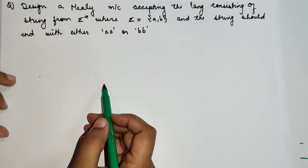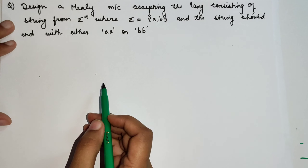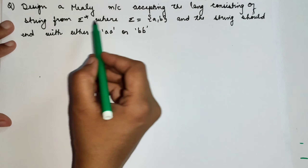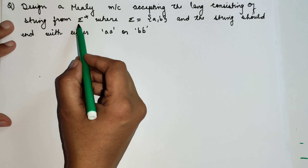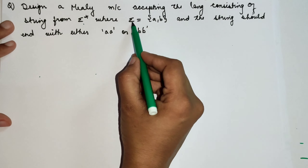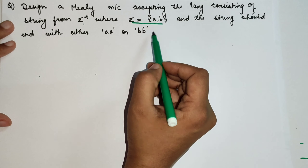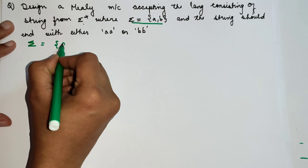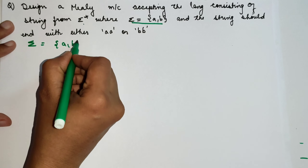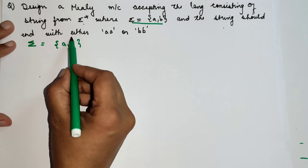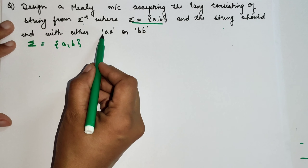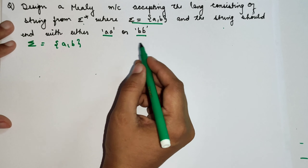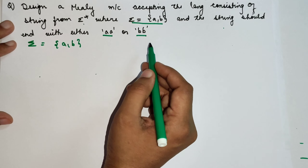In this example, we are going to design a Mealy machine accepting the language consisting of strings from an input alphabet where the input given is A and B, and the string should end with either AA or BB. So how are we going to design a Mealy machine for this?